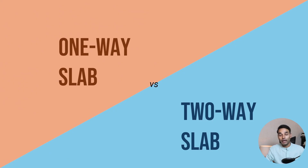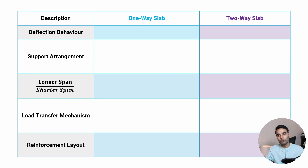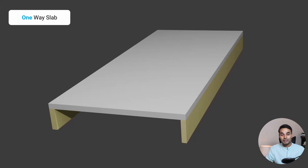In this video you'll be learning about the differences between a one-way slab and a two-way slab with respect to the following things: the deflection behavior, the support arrangements, the longer and shorter span ratio, the load transfer mechanism, and the reinforcement layout. If you want to skip to any of these sections, timestamps are given in the description.